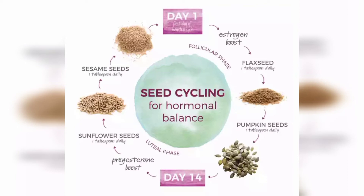Now, our cycle is a 28-day cycle. How do you follow? You can align it with a new moon. You follow the first half from the new moon, then you follow the second half.